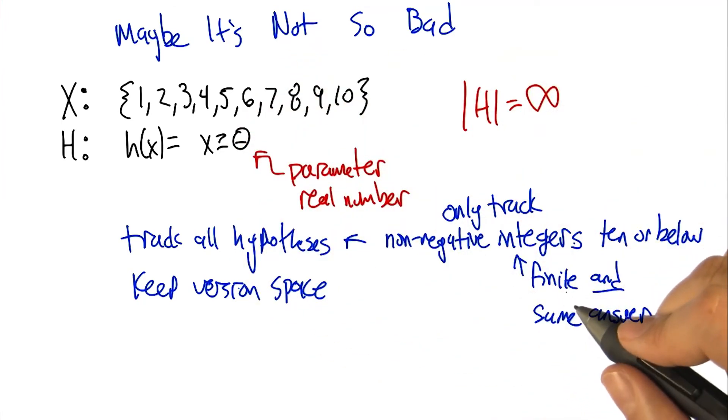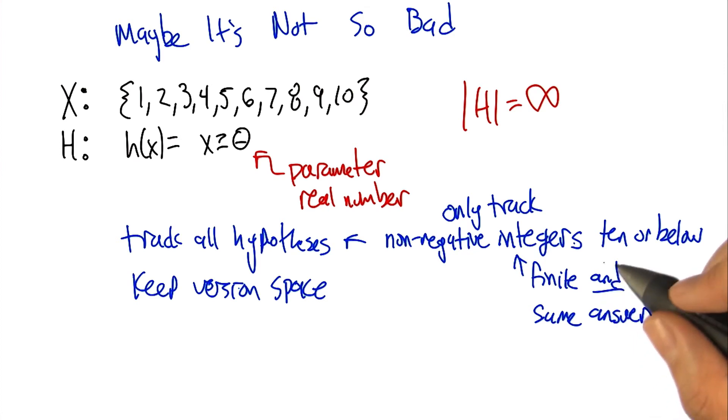So there's a notion of a syntactic hypothesis space, which is all the things you could possibly write. And then there's the semantic hypothesis space, which are the actual different functions that you are practically representing.